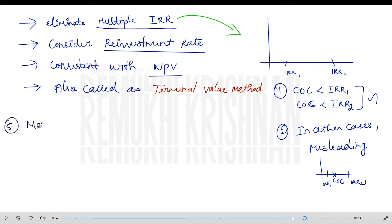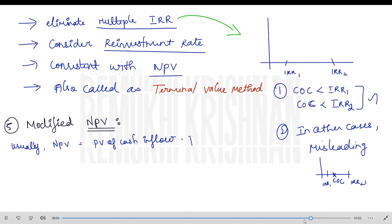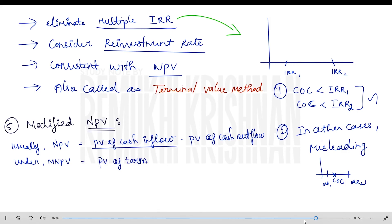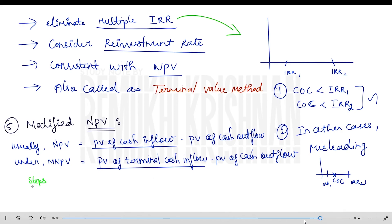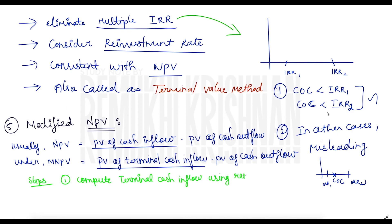Now we move to Modified Net Present Value. The formula for NPV is: present value of cash inflows minus present value of cash outflows — benefit minus cost. For modified NPV, instead of considering cash inflows we consider terminal cash inflows: present value of terminal cash inflows minus present value of cash outflows.